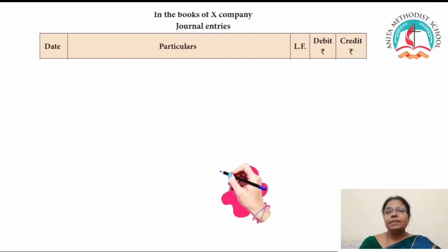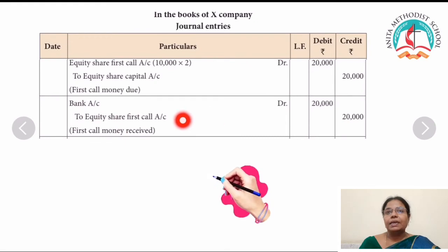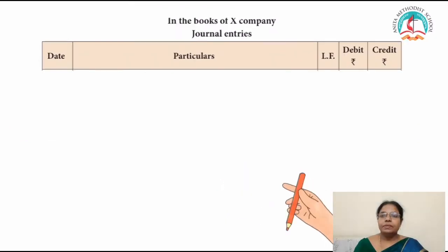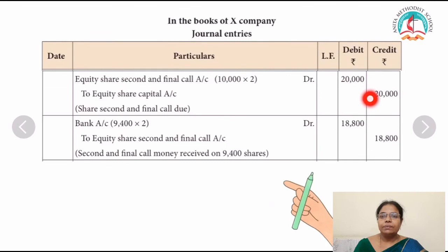After the allotment money, what is the next installment? Call money. The first journal entry is for call money due. Equity share first call: 10,000 into 2 = 20,000 — to equity share capital: 20,000. After the call money due, you have to receive the call money. Bank account debit — to equity share first call: 20,000. Now the company has made the second and final call. Equity share second and final call: 10,000 at the rate of 2 = 20,000 — to equity share capital account. Share second and final call due.